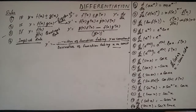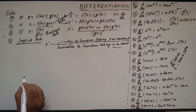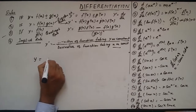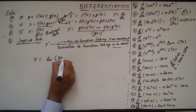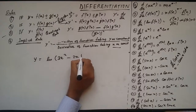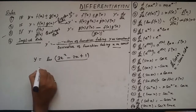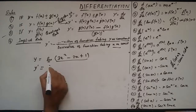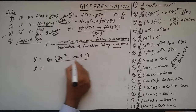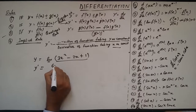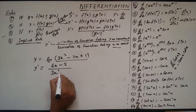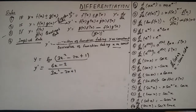y is equal to ln(3x² − 2x + 1). This is again a logarithm function. So the derivative is: the derivative of the inner function (3x² − 2x + 1), which is 6x − 2, upon the function itself which is 3x² − 2x + 1. So the answer is (6x − 2) upon (3x² − 2x + 1).